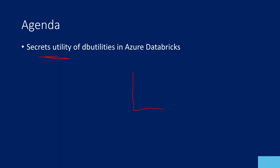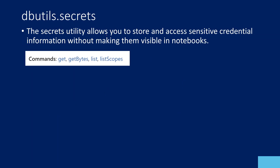In our past videos we discussed that there is something called a Secret Scope. Once you create a Secret Scope, inside it you will have secrets, and inside every secret you will actually store credential information — maybe passwords or anything sensitive. So instead of hard-coding passwords inside your notebook, you store your credentials into these secrets and read them from there inside your notebook. This secrets utility will allow you to store and access sensitive credential information without making it visible in the notebooks.